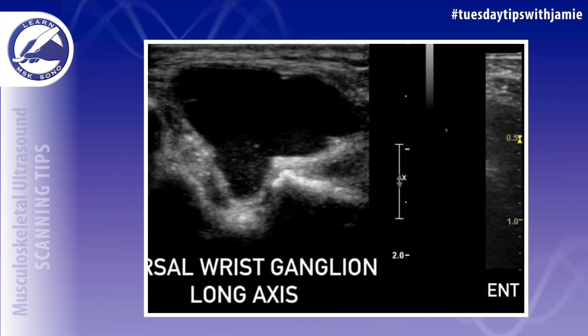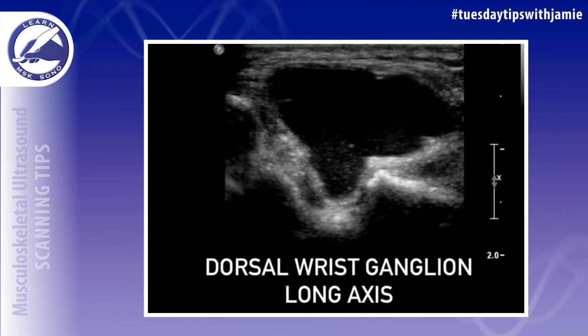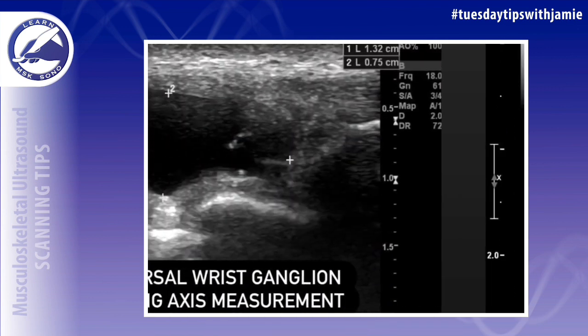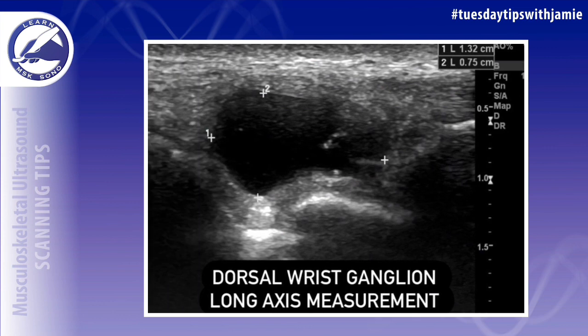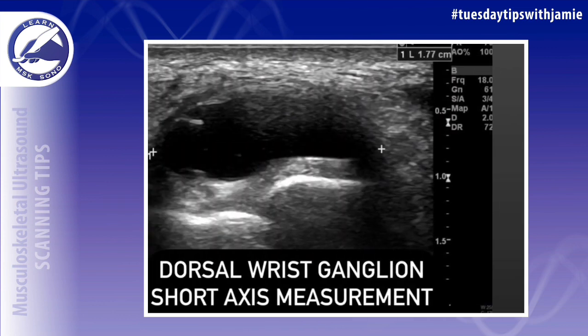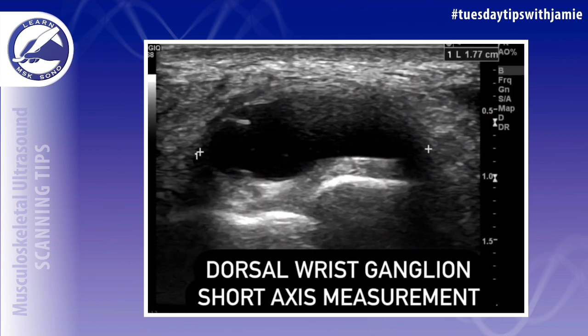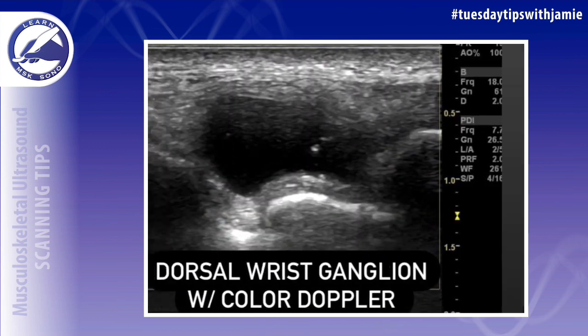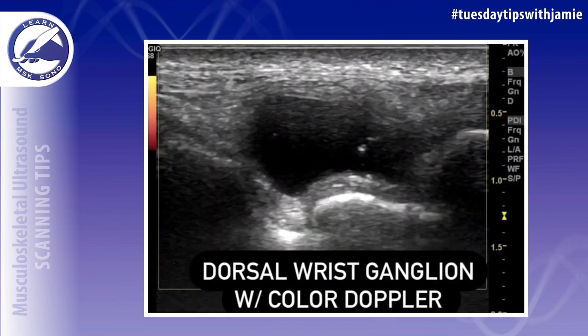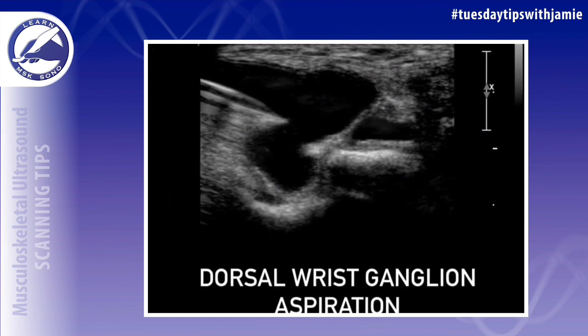The scapholunate ligament is the site where a dorsal ganglion cyst will live inside the joint capsule. You should measure it in the long axis, in the length and AP measurement, and then also in the short axis take a transverse measurement. You should also use color Doppler to assess the cyst for any vascularity within it, and you can aspirate if it's needed.